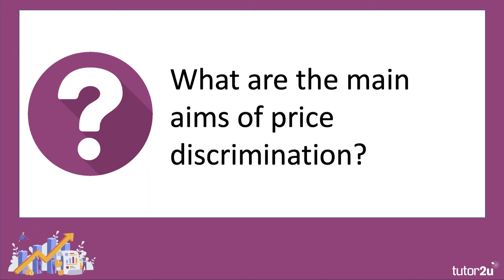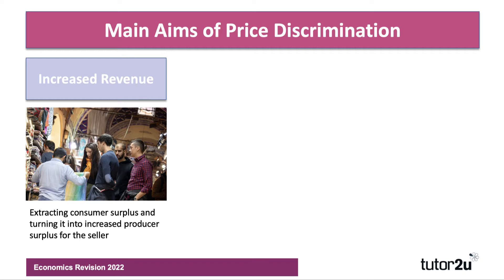Now, what are the main aims and objectives of price discrimination? Well, there are lots of them — let me just pick out three. The first is to generate more revenue. Many businesses use this pricing tactic as a way of increasing their top line by extracting consumer surplus and converting it into increased producer surplus for the seller.